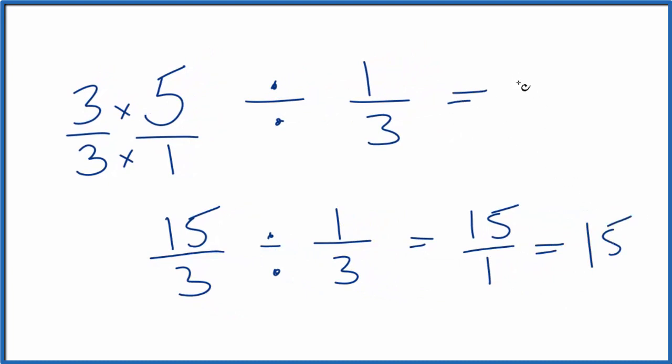So 5 divided by 1/3, that's 15. 1/3 goes into 5 15 times. Here's another way to do it. I like this way because it's a little more general. It works for a lot of different problems.